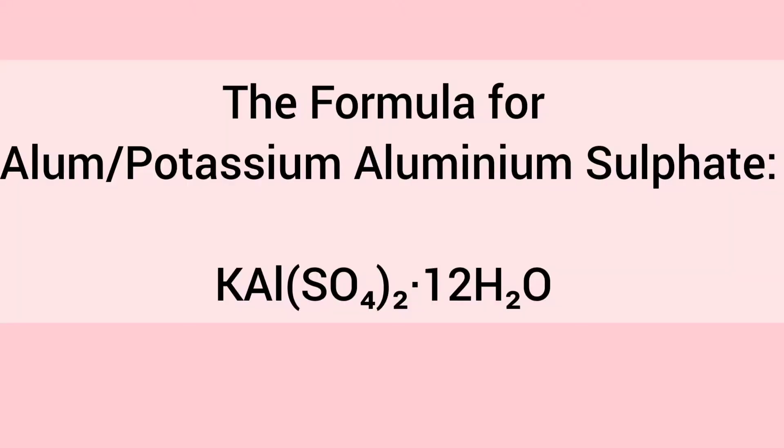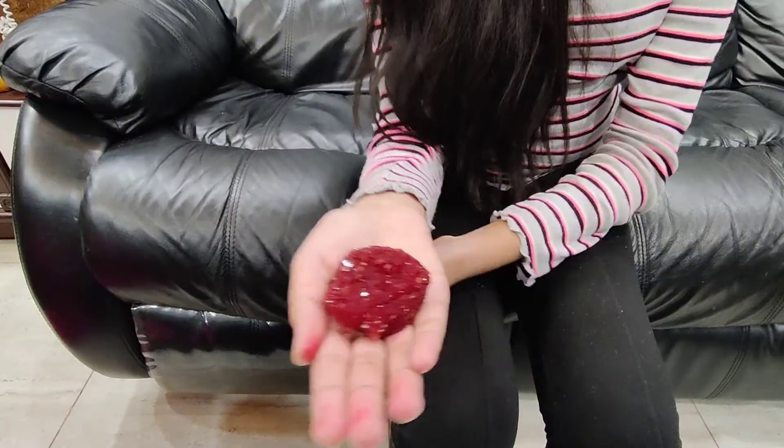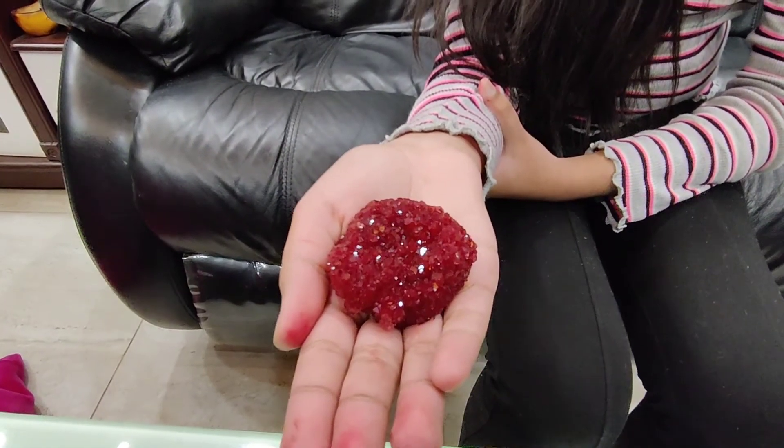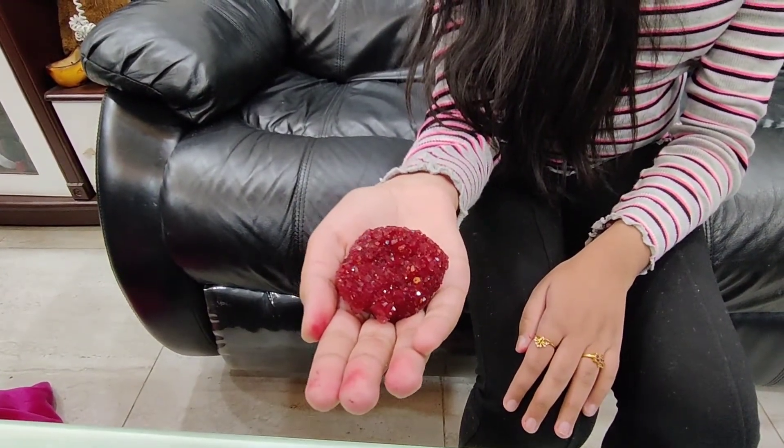Alum, or potassium aluminium sulphate, is a chemical compound with the formula KAl(SO4)2·12H2O. It forms beautiful regular octahedral crystals like the one we obtained. The science behind the formation of alum crystals is crystallization. In my experiment, crystallization occurred in two phases. When alum was supersaturated in water, crystallization in the first phase occurred, allowing the molecules of alum to stick together to form one large seed crystal.